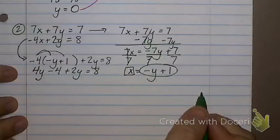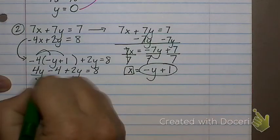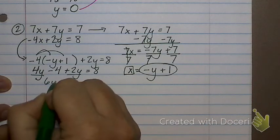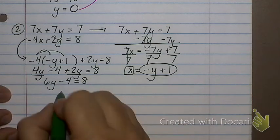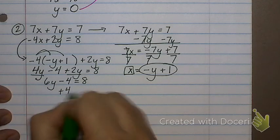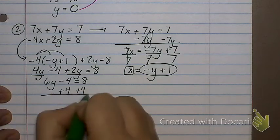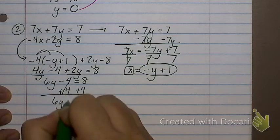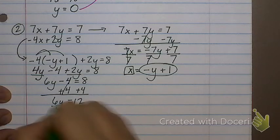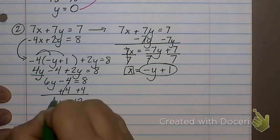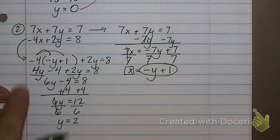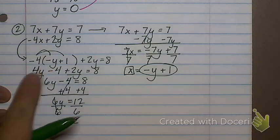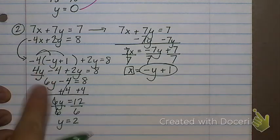Do I have some like terms? 4y and 2y is 6y minus 4 equals 8. What now? Add 4. 6y equals 12. Divide by 6, and what does y equal? 2. Do you see why we spent all that time solving equations at the beginning? Because that's like the easy part of this problem.